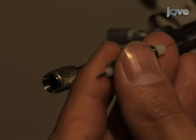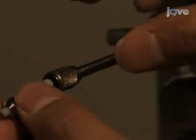Insert a 5 centimeter piece of tungsten wire into the electrode holder and screw it to the shaft on the manipulator.